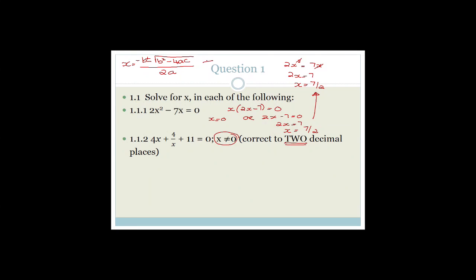This is the quadratic formula, which means we need to get the expression into the form ax squared plus bx plus c. We have 4x plus 4 over x plus 11 equals zero. The easiest way is to multiply everything by x to get rid of the denominator, giving us 4x squared plus 4 plus 11x equals zero. We need to reorder this as 4x squared plus 11x plus 4 equals zero.